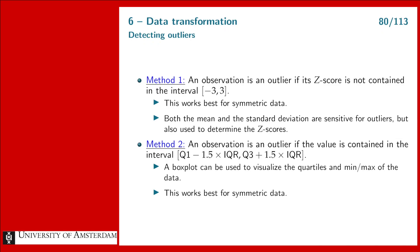Hello everyone and welcome back to this second lecture for the course Introduction to Data Science. In the previous video we talked about data transformations and in particular the z-score. We also talked about outliers and extreme observations. What we want to do now is use z-scores to determine for an observation whether it is an outlier yes or no — a quantifiable way to detect outliers.